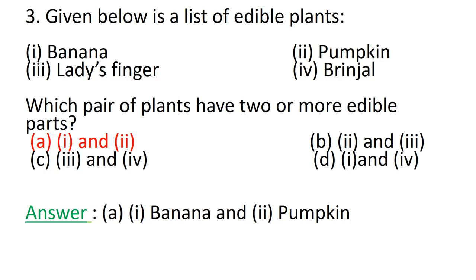Out of banana, lady's finger, pumpkin and brinjal, the plants banana and pumpkin have more than two edible parts. You are already aware about the edible parts of banana from the previous question. For pumpkin, we all are aware that the fruit is the consumable part. However, the pumpkin flowers are also used in a ground form to garnish some food items.